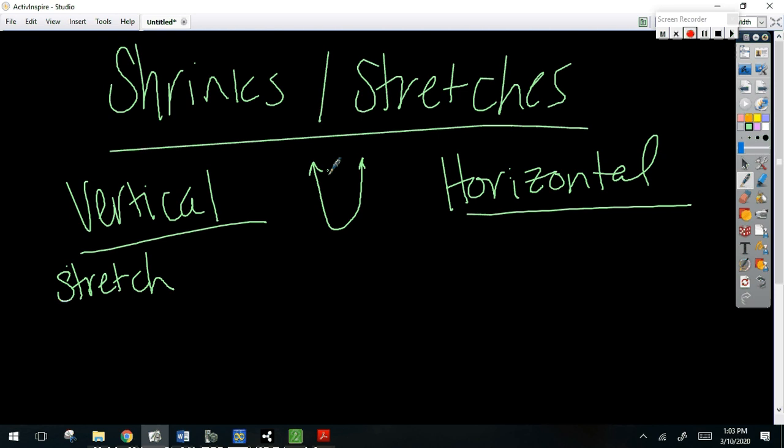It starts to get what? Longer, but what happens width-wise? Does it get wider or skinnier? Skinnier, right? So a vertical stretch actually shrinks the graph in this way. Does that make sense to you?